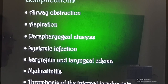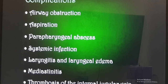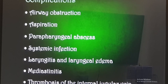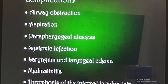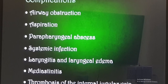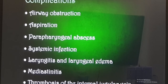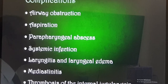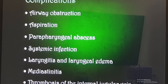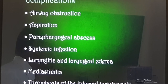Coming to the complications: if the swelling is large it may result in airway obstruction. Sometimes the abscess breaks on its own and may result in aspiration and chest infection. The abscess can also spread from the peritonsillar area into surrounding tissue and neck spaces, leading to systemic infection. These complications are more common in smokers, alcoholics, or those in an immunodeficiency state.